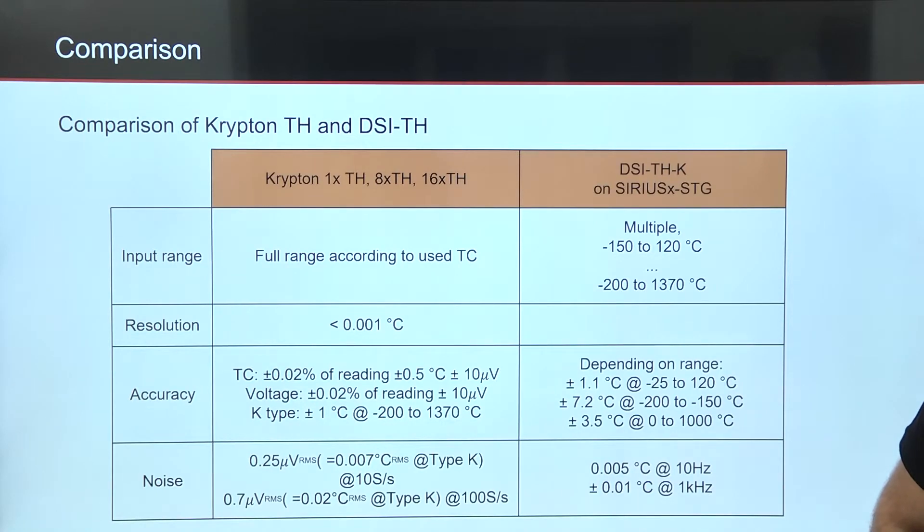In this slide we see comparison of Krypton TH and DSI THK. Since Krypton TH is a dedicated instrument for measuring temperature, it can be used with any type of thermocouple wire, has greater accuracy and lower noise.